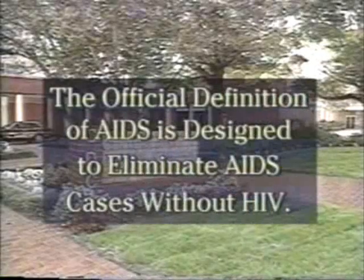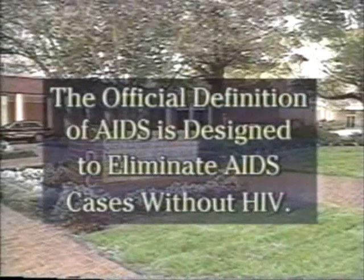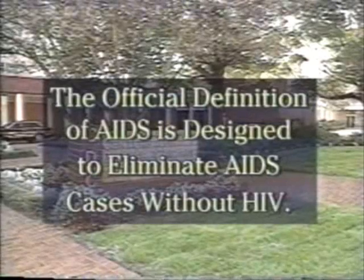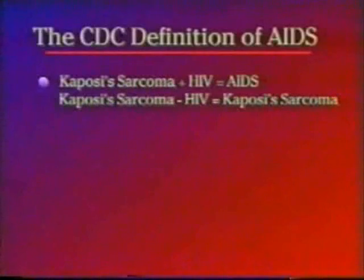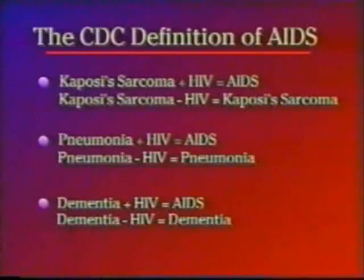The official definition of AIDS is designed to eliminate every case of AIDS that presents an embarrassing non-relation against HIV. The official definition of AIDS is 30 previously known diseases in the presence of antibody against HIV. So if you have Kaposi's sarcoma and HIV antibodies, you're an AIDS patient. Without it, you're a Kaposi's patient. Pneumonia with HIV antibodies is AIDS; in the absence it's pneumonia. Dementia in the absence of HIV antibodies is dementia, and with it it's AIDS. That's the AIDS definition.